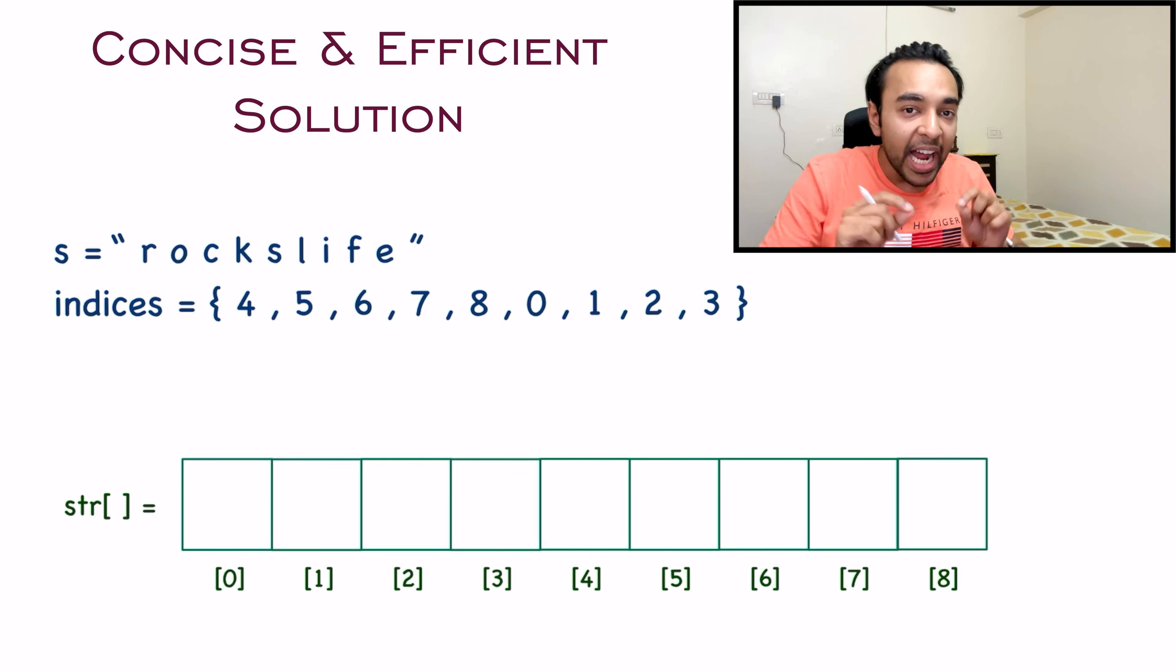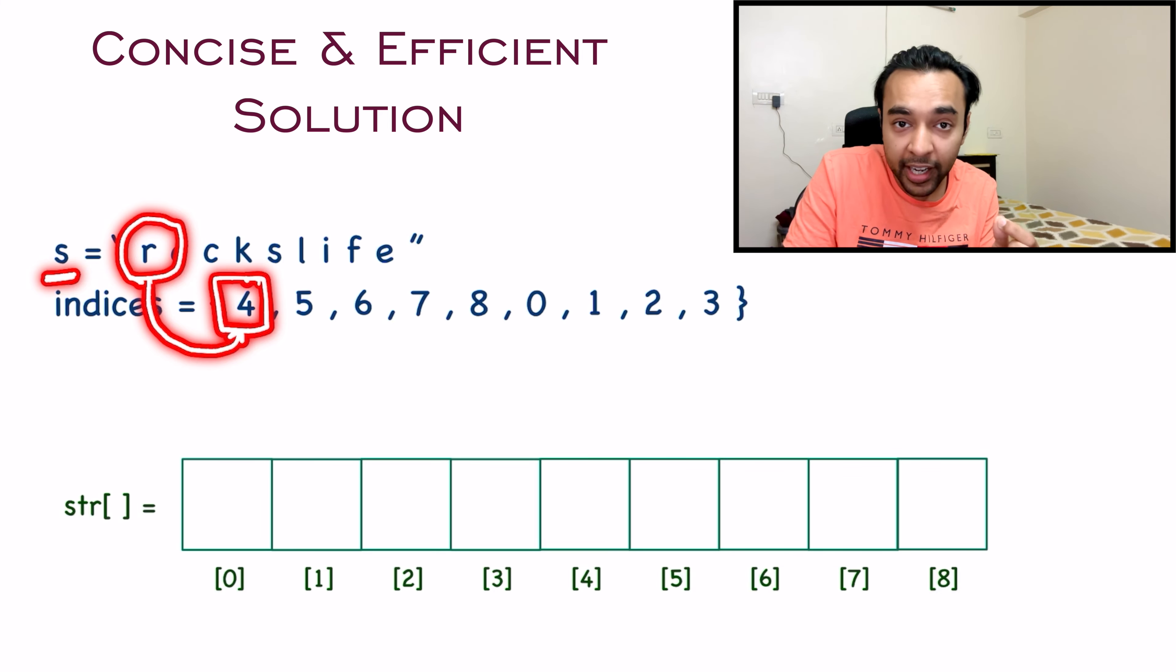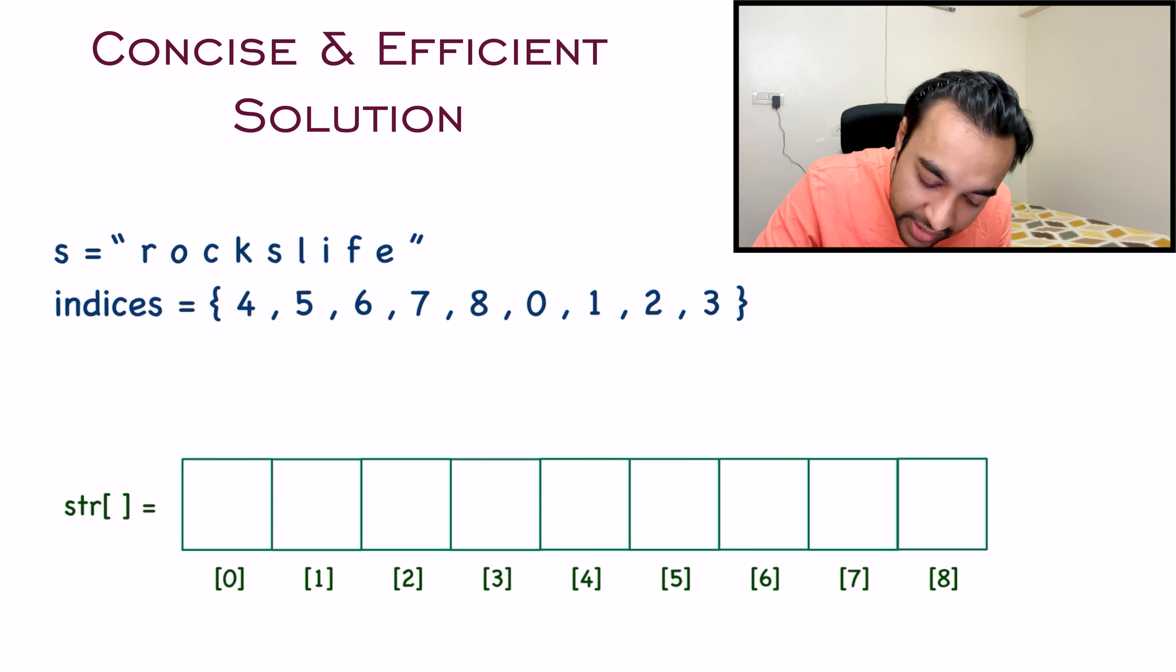Now just follow the problem and we will do exactly what the problem said. It is telling me that for the string s, I have a character R and where does it go? It goes at the index 4. So just take up this R and add it to your fourth index. Similarly, move ahead now. What is the second character? The second character is O and your indices array tells you that this second character will go at your fifth index. So just take up this O and add it to your fifth index over here.